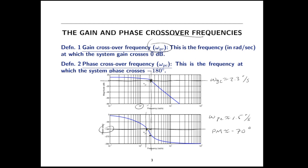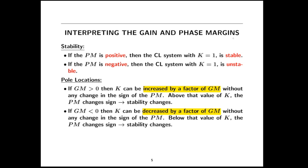Now let's look at the gain margin. Moving the omega pc line up through the gain plot, we focus on the amount the magnitude plot is above the 0 dB line — and again, that's negative gain margin. Here our gain margin is about negative 5 dB. So in this example we have both negative gain margin and negative phase margin. Gain margin is positive if it's below 0 dB, and phase margin is positive if it's above negative 180 degrees.